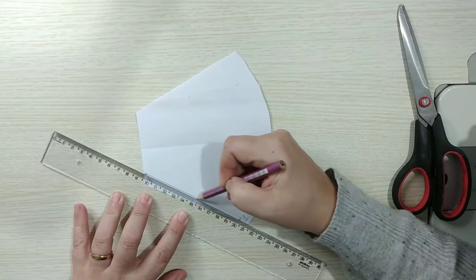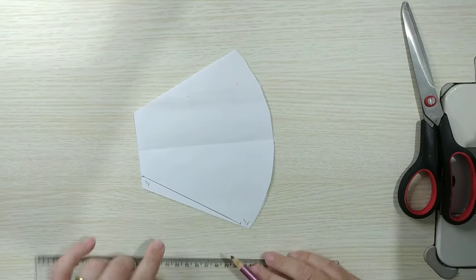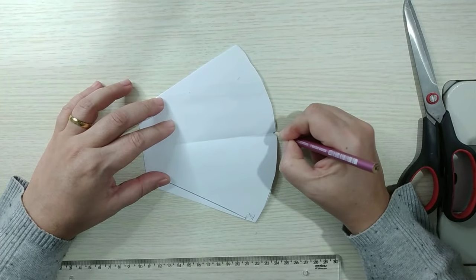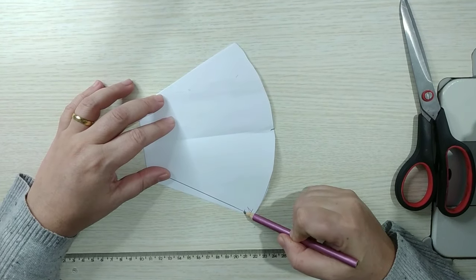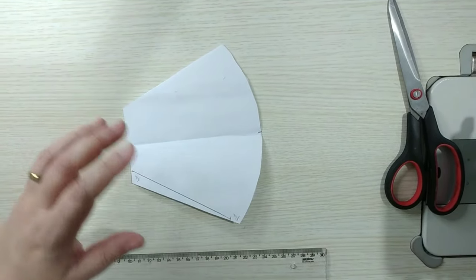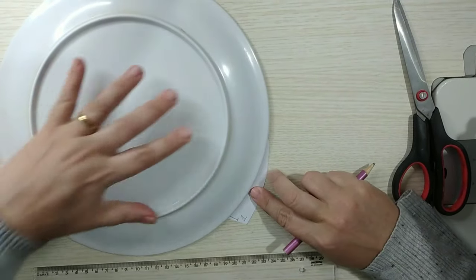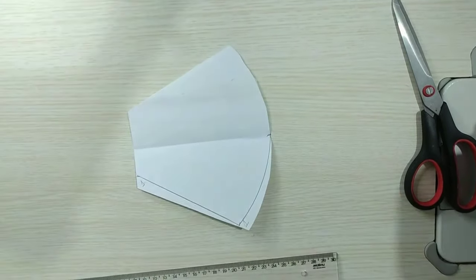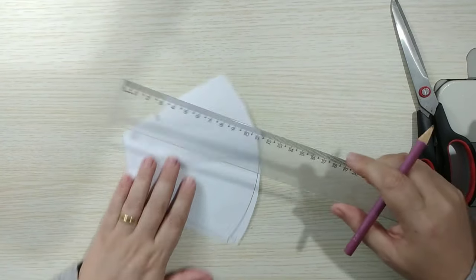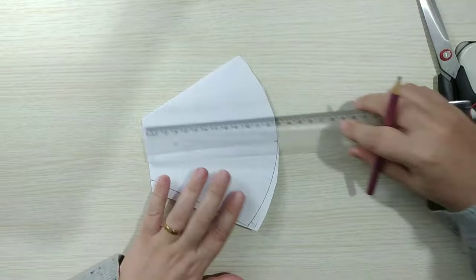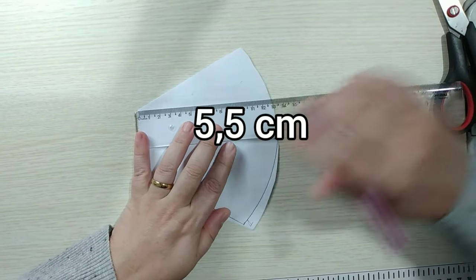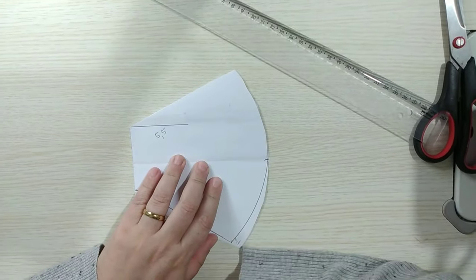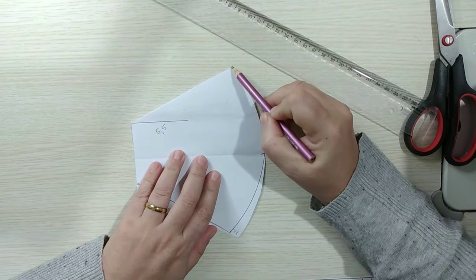E aí a gente vai ligar essa marquinha aqui com a outra. Aqui, olha, que eu fiz a dobra. Tá vendo que tá vincada? É o meio. Então, eu vou fazer um tracinho aqui também. Que aí agora eu vou ligar esse um até esse pontinho aqui. Vou até usar o meu prato pra poder me auxiliar aqui a fazer essa curva.